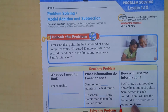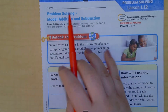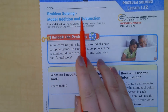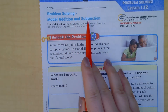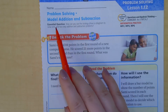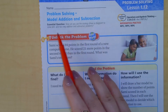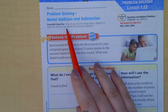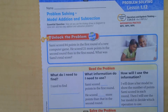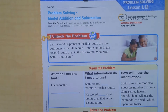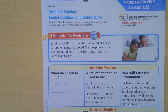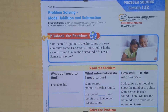We are learning about problem solving. We're going to model addition and subtraction facts to solve word problems. The essential question is: how can you use the strategy 'draw a diagram' to solve one and two-step addition and subtraction problems? We're going to work through these problems to show you the steps, then practice some word problems together.